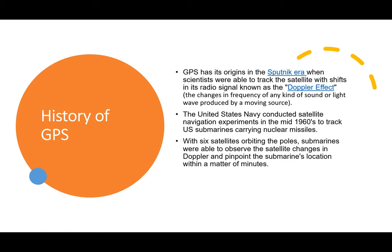GPS has its origins in the Sputnik era, when scientists were able to track the satellite with shifts in its radio signal known as the Doppler effect — the changes in frequency of any kind of sound or light wave produced by a moving source. The U.S. Navy conducted satellite navigation experiments in the mid-60s to track U.S. submarines carrying nuclear missiles. With six satellites orbiting the poles, submarines could pinpoint their location within minutes. This was around the time GIS was just being conceived.